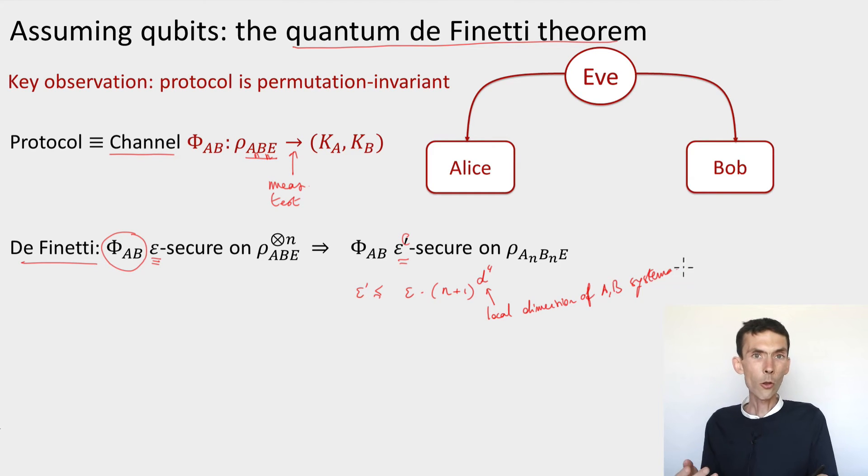d is the local dimension of any one of the A or B systems. So if these are, for instance, honest strategies, these would just be qubits. So d would be equal to 2, this would be n to some power 16, but the epsilon, the kind of security that we get, is exponentially small in n. So epsilon would be exponentially small, times a polynomial, we'd get an epsilon prime, which is exponentially small.